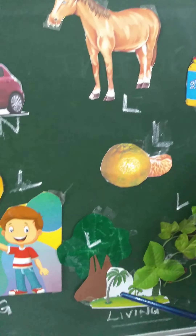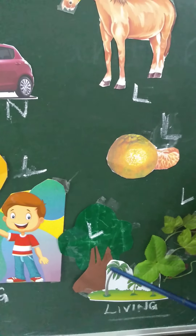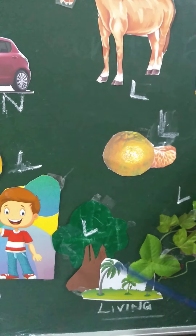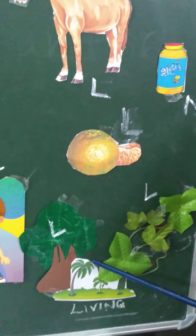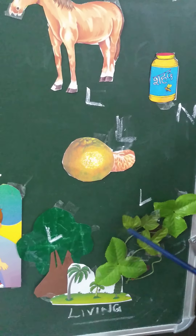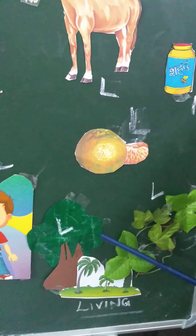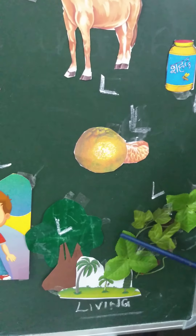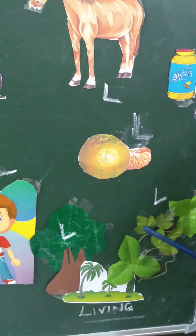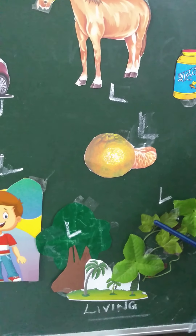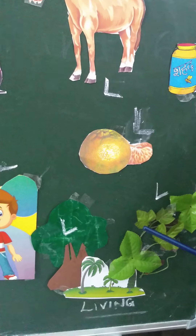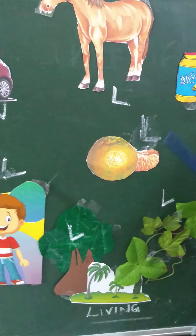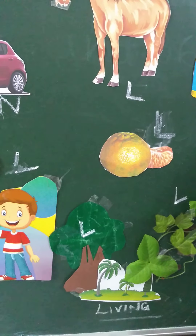Children, it is very important to learn that trees are living things. They give us many things. We get fruits and vegetables from trees. You can see many living and non-living things in your surroundings.